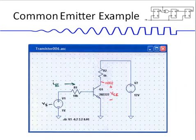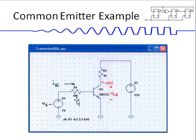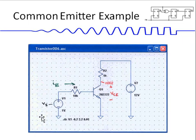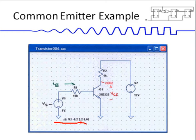Here is a circuit example in LTspice using a base resistor of 10 kilohms, a collector resistor of 1 kilohm, and a Vcc of 12 volts. The input voltage starts at 1 volt and is swept from minus 0.2 volts to plus 2.2 volts in increments of 0.01 volts, so we can see how the transistor reacts to different input voltages which create different input currents.